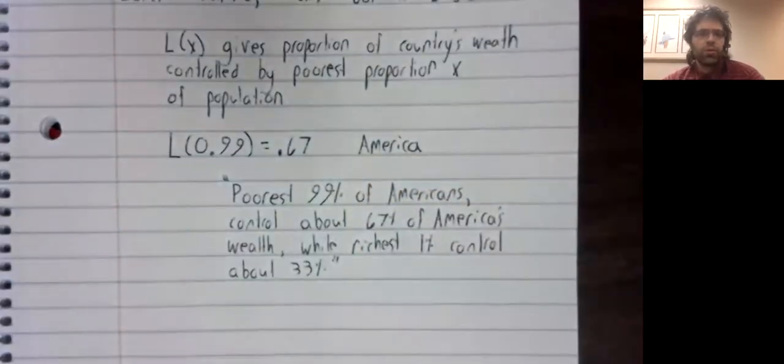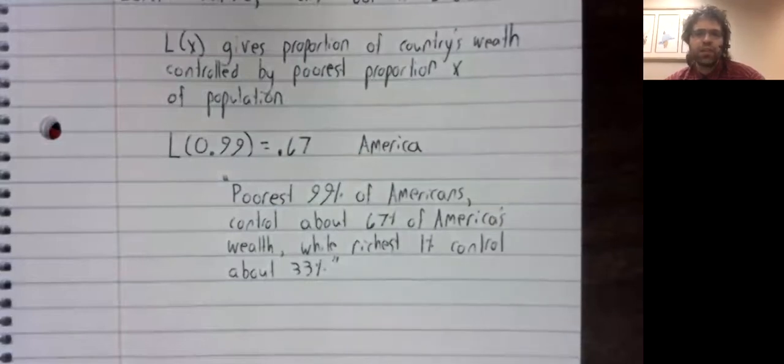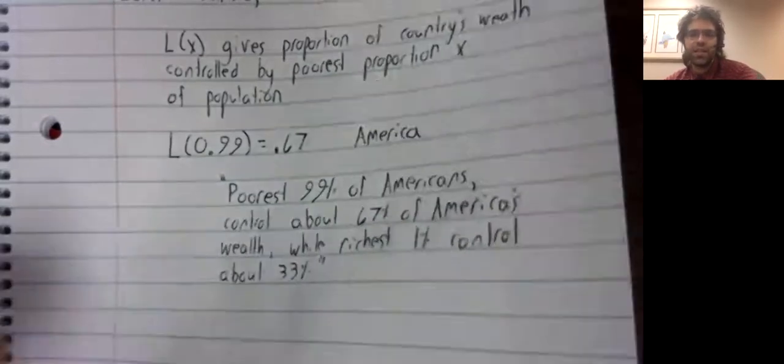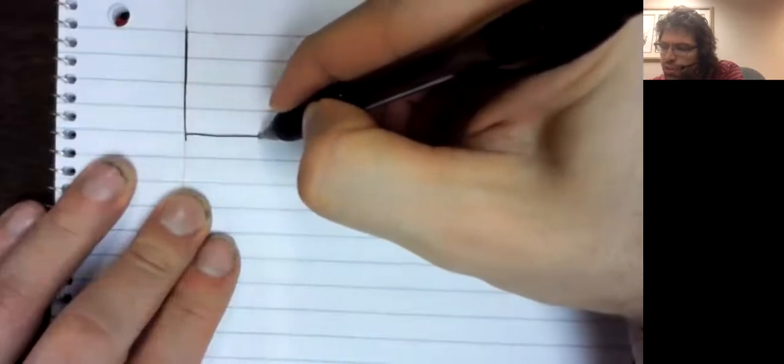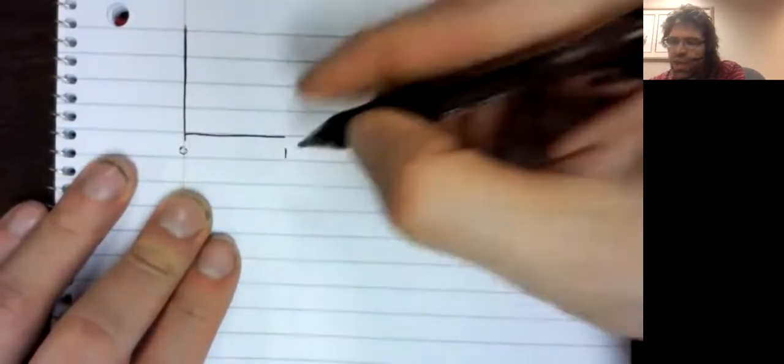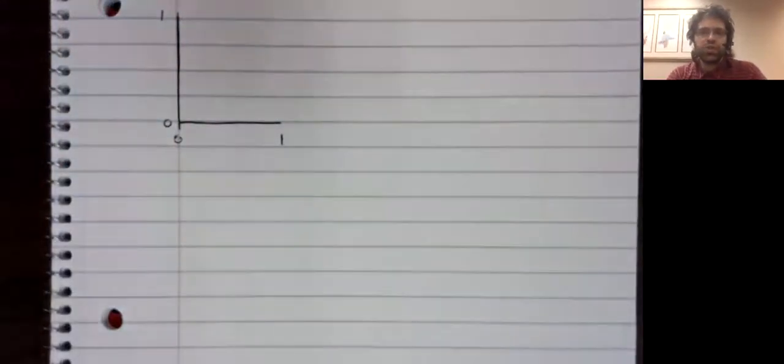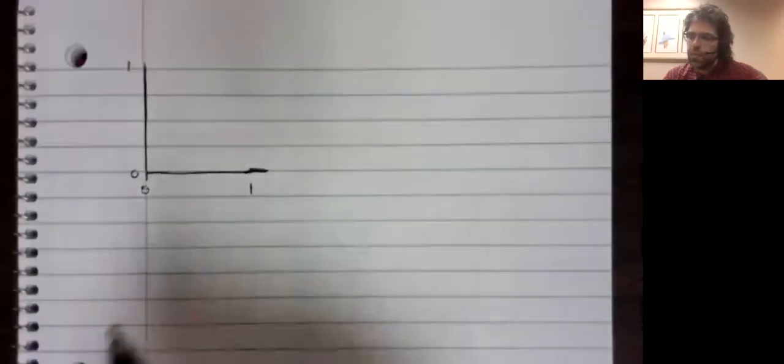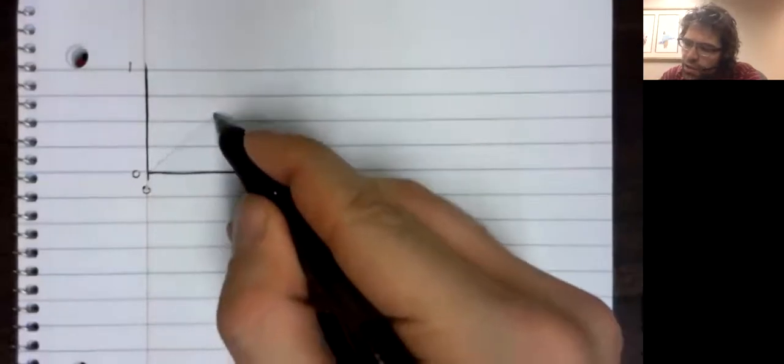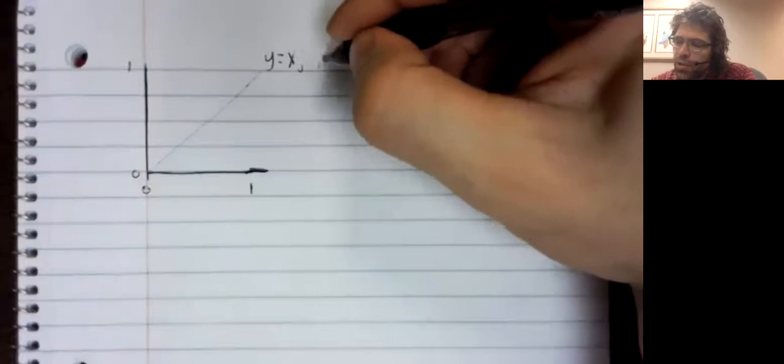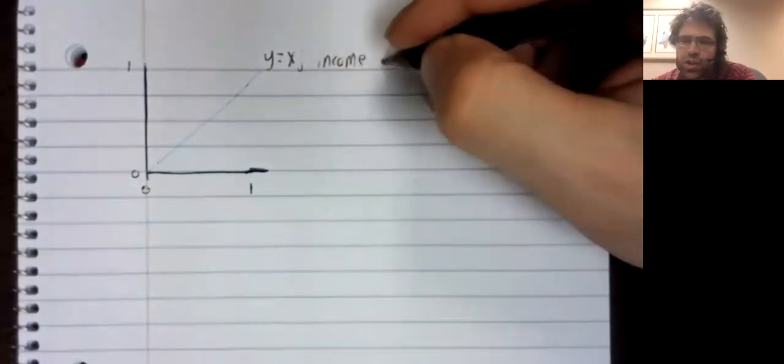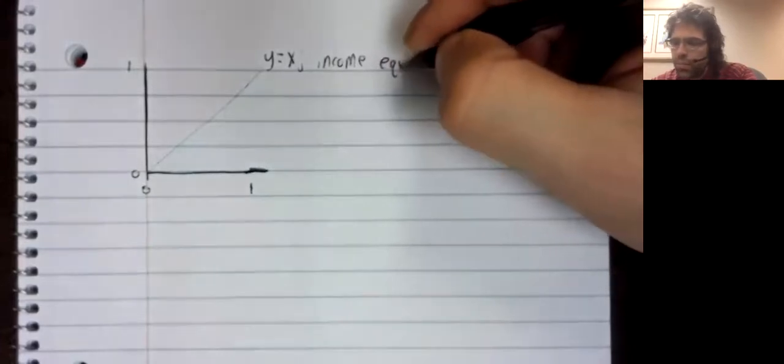And we are going to use the Lorenz curve to define something called the Gini index. So the Lorenz curve for any country has a domain from 0 to 1 and a range from 0 to 1.